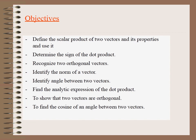The objectives of our lesson are: to define the scalar product of two vectors and their properties; to find the sign of the dot product; to determine when two vectors are orthogonal or perpendicular; to find the norm of a vector; the angle between two vectors; the analytic expression of the dot product; and how to calculate the cosine of the angle between two vectors.